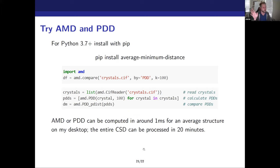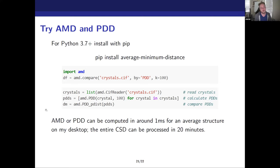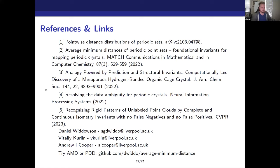That is roughly the end of the talk. If you want to try this, references are at the bottom — it's very simple to write a few lines of Python to compare crystals in a CIF or a few CIFs, taking around a millisecond per structure so you can process millions of CIFs. Thank you very much.